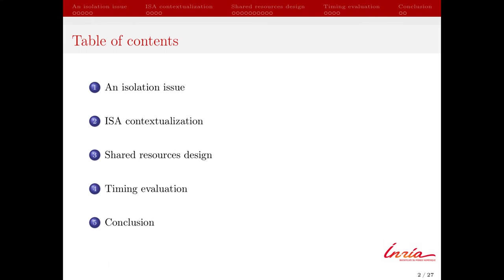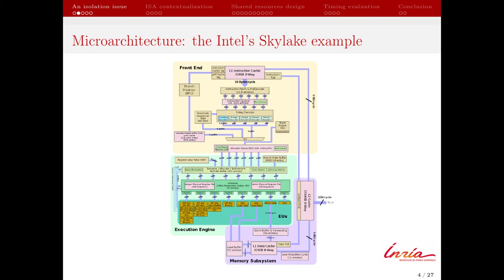The role of a processor is to execute the different instructions which compose the software. Each instruction corresponds to one or more operations described by the ISA, and the microarchitecture is the hardware part of the system which performs the execution of these operations. Modern microarchitectures, as illustrated here with the Intel Skylake, are the result of decades of optimization, particularly to improve system performance. These microarchitectures are now really complex systems composed of many mechanisms.